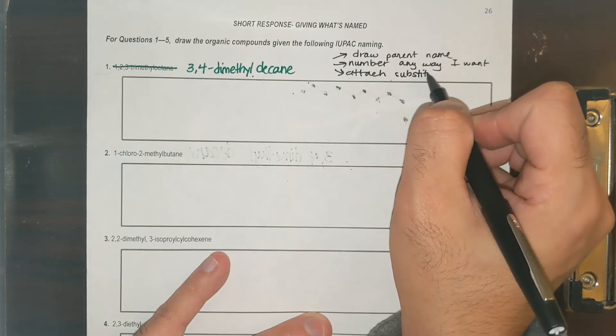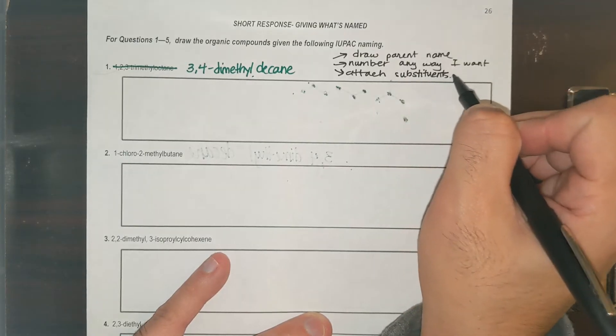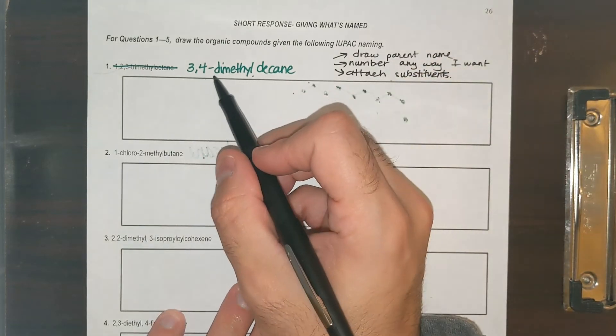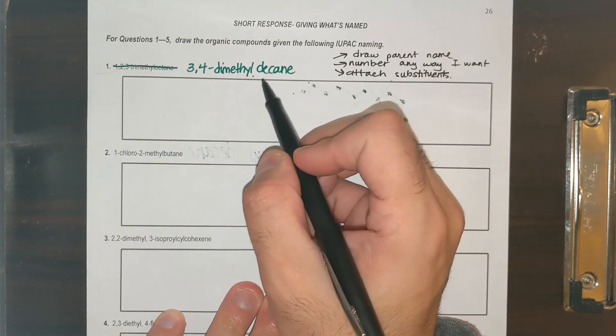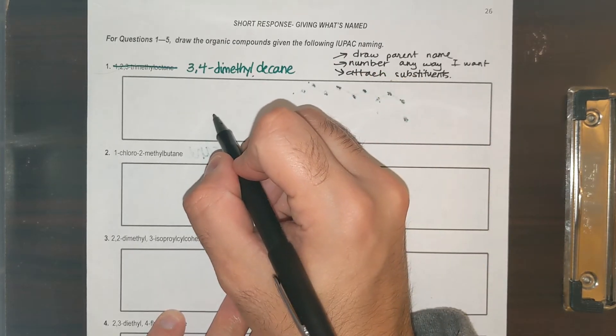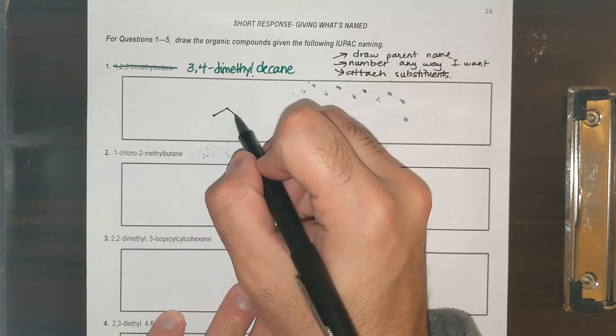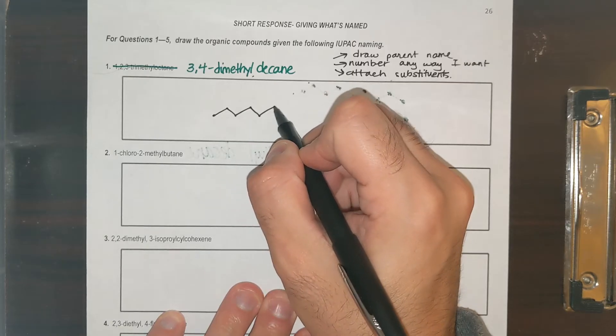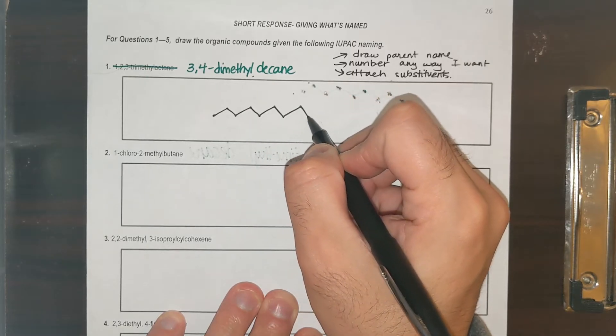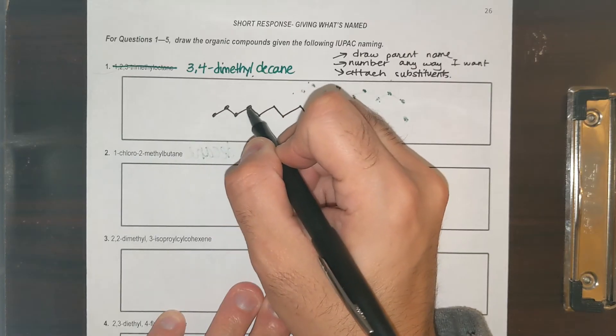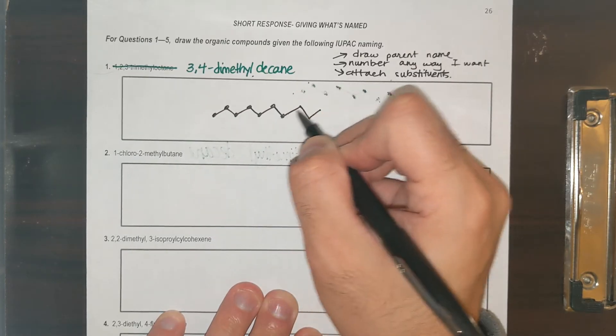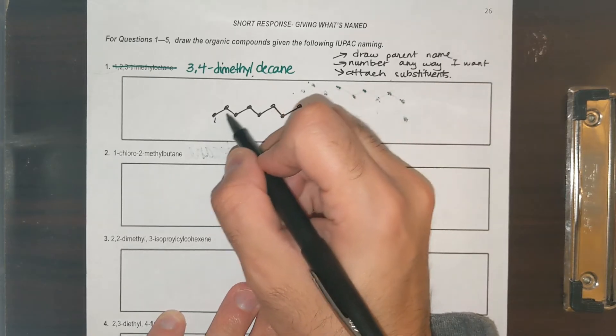Now that you number it, you don't have to worry about where the numbers are because you numbered it. So I have 3,4-dimethyl decane. Decane means 10 and I have all single carbons. So one, two, three, four, five, six, seven, eight, nine, ten. This is decane.